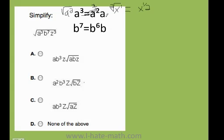For example, a³ equals a² times a. Also, I can write down b⁷ as b⁶ times b. c³ I can write down as c² times c. Remember, when I have the same base, I can just add the exponents.